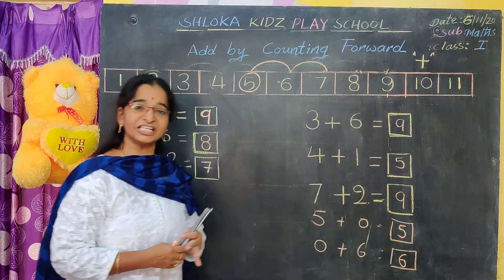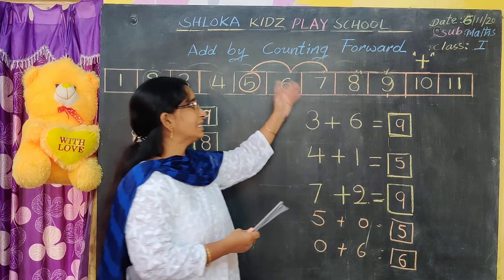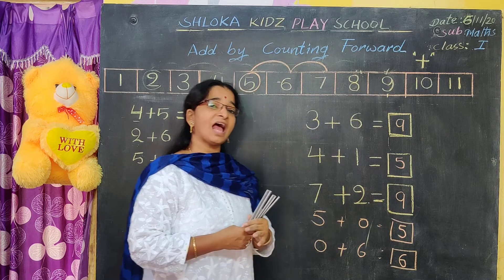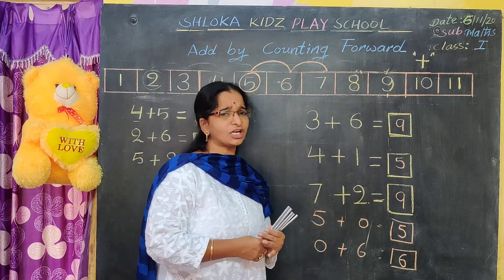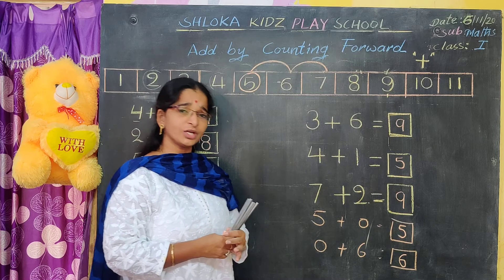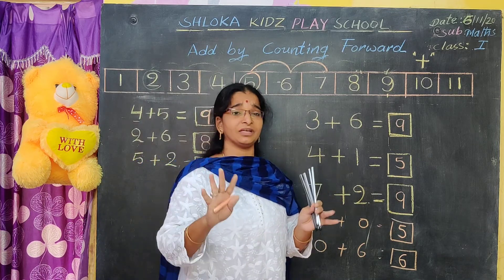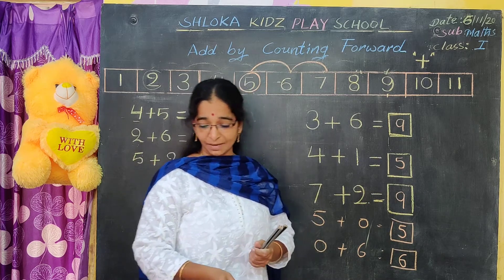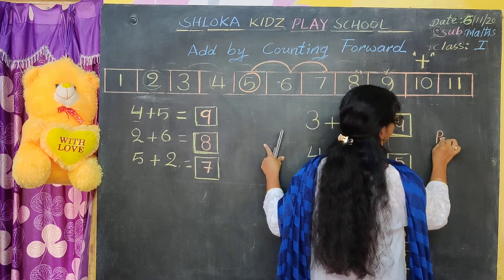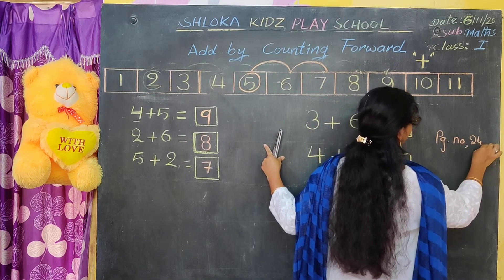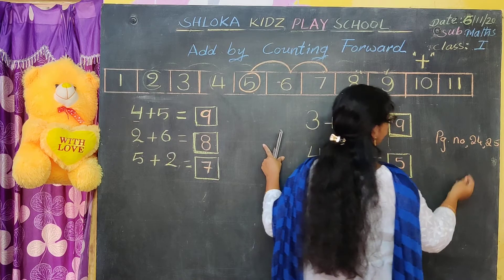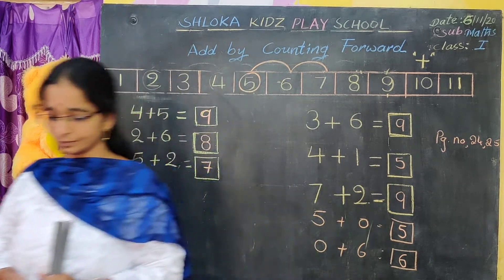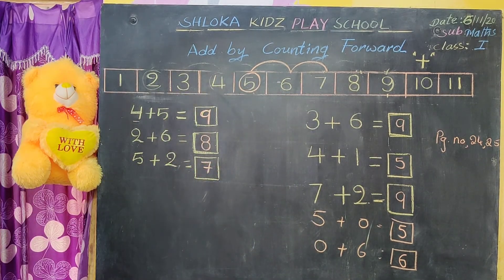So like this we have to do the additions. Add by counting forward means you keep the number in the mind and the finger and you count it. Page number 24 and 25, problems are there. Please solve these problems. Thank you.